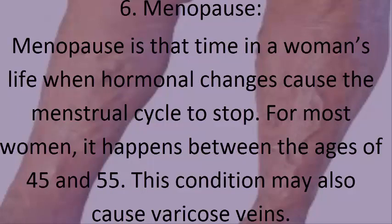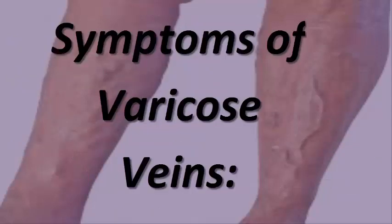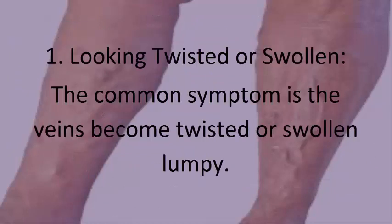6. Menopause: menopause is that time in a woman's life when hormonal changes cause the menstrual cycle to stop. For most women, it happens between the ages of 45 and 55. This condition may also cause varicose veins. Symptoms of varicose veins: 1. Looking twisted or swollen — the common symptom is the veins become twisted or form swollen lumps.